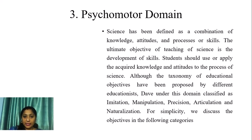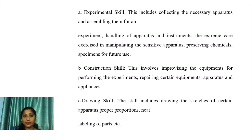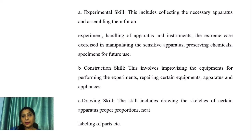The psychomotor domain: science has been defined as the combination of knowledge, attitudes, and processes of skills. The ultimate objective of teaching science is the development of skills. Students should use and apply the acquired knowledge and attitudes to the process of science. The taxonomy of educational objectives under this domain is classified as: imitation, manipulation, precision, articulation, and naturalization.